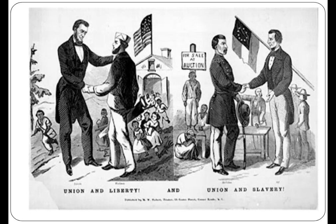Lincoln was facing off against George McClellan, who had served as one of his chief generals early in the war before being dismissed for not conducting the war as Lincoln wished. Lincoln tried to make the election of 1864 a referendum about the future of the country — not what he had done as president over the last four years, but that he, as leader, was looking to bring about liberty and freedom for all people. His idea was that if you voted for him, you were voting for abolition, voting for a better America.